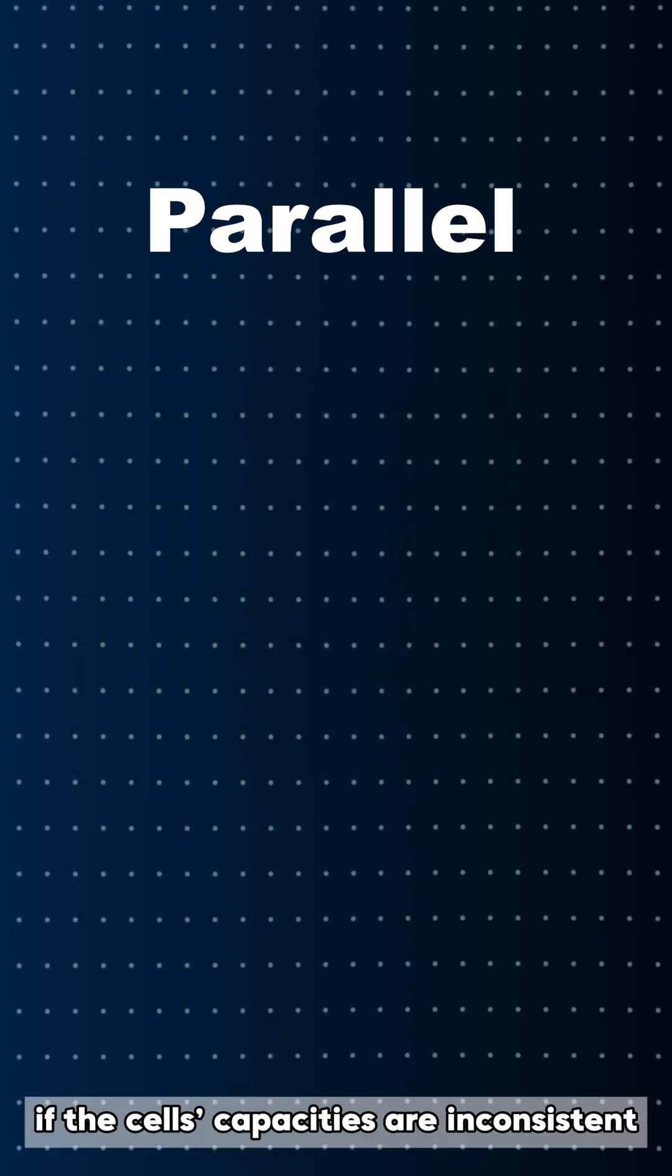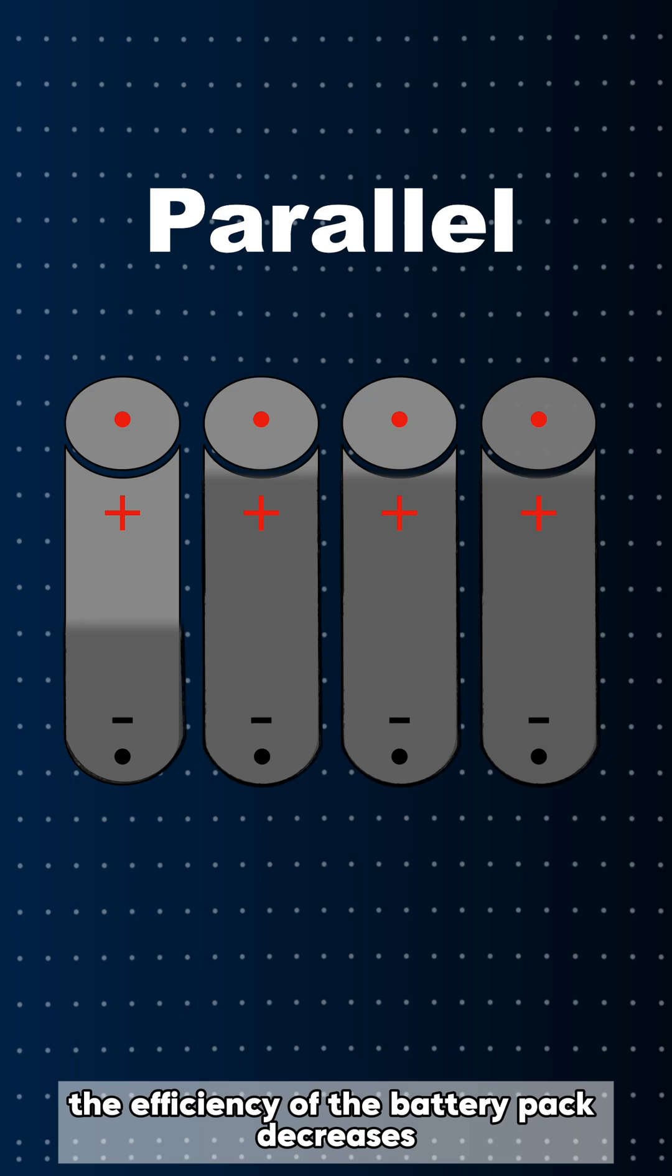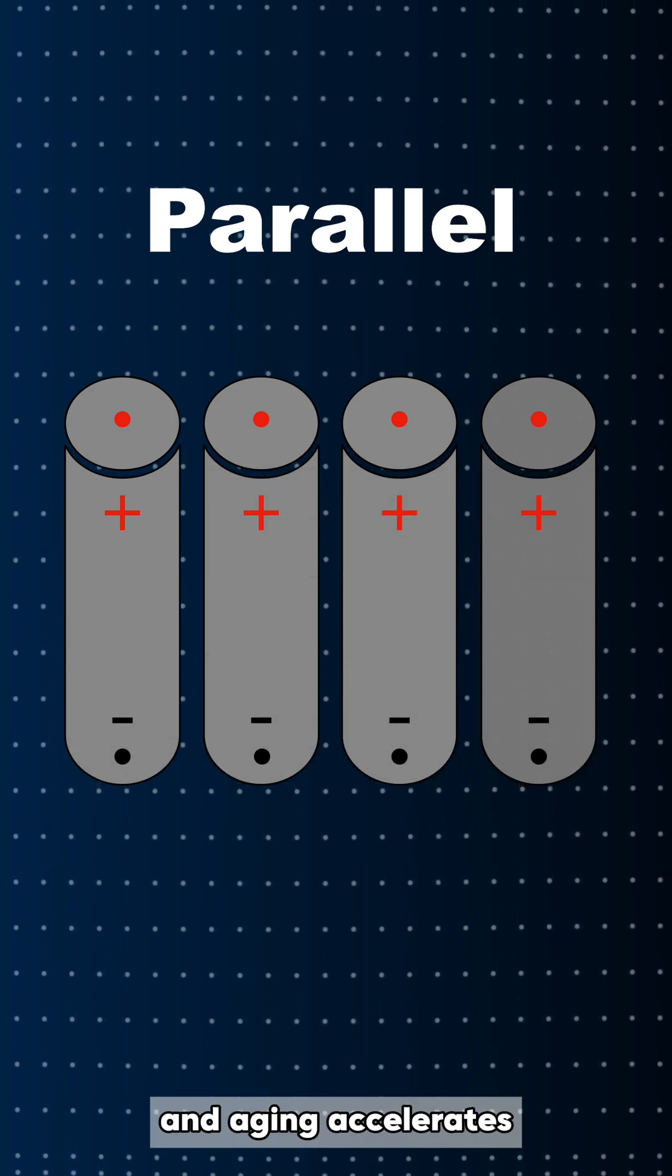However, if the cell's capacities are inconsistent, the efficiency of the battery pack decreases and aging accelerates.